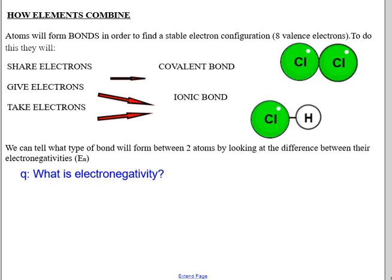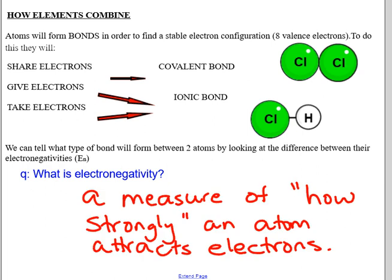Whether or not atoms will choose to share electrons or give and take electrons depends on their electronegativity. Electronegativity is the way that atoms measure how strong they are not only at holding on to their own electrons but also how strong they are at attracting electrons away from other elements. Electronegativity is a measure of how strongly an atom attracts electrons.